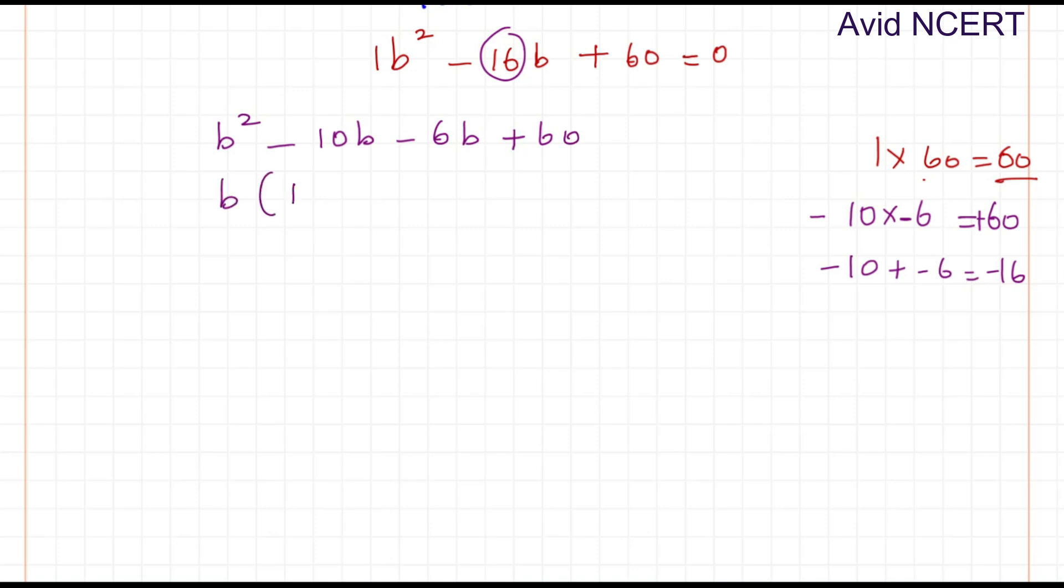So B times (B minus 10) minus 6 times (B minus 10). Which factors to (B minus 6) times (B minus 10) equals 0. Therefore, B equals 6 or 10.